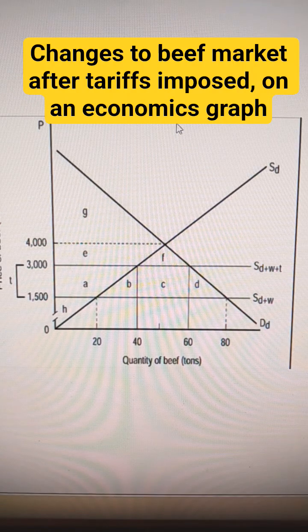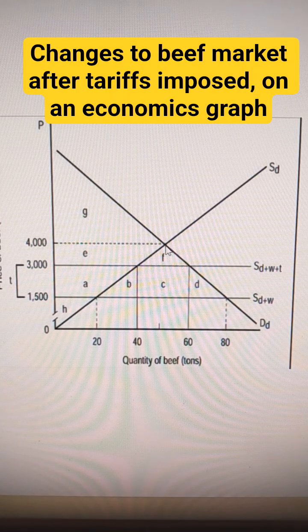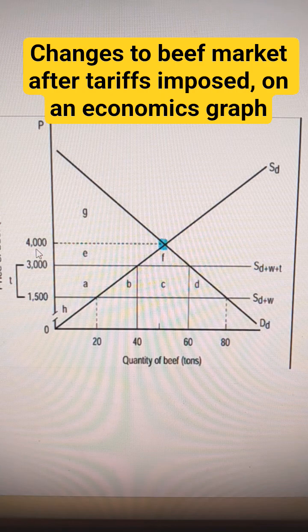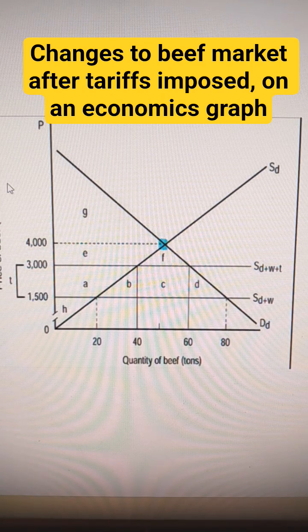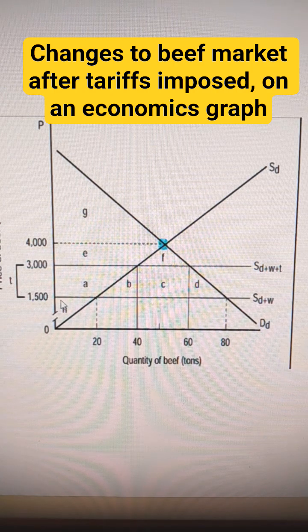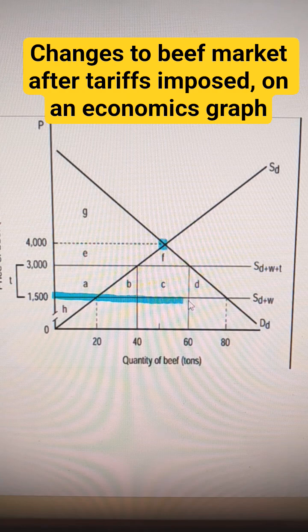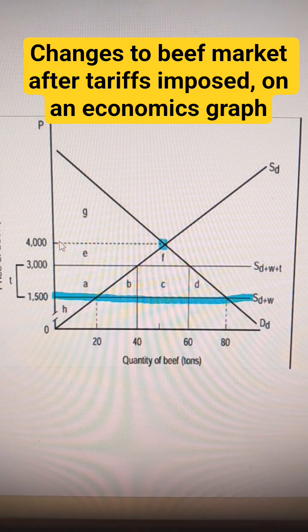Here I've got a trade graph. This is a country where the domestic price for beef is $4,000 per ton. They can import as much as they want from the rest of the world at $1,500 per ton.